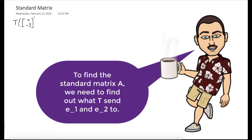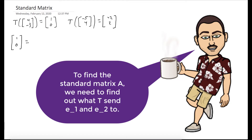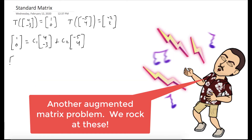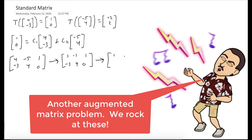So we have a linear transformation that sends (4, -3) to (1, 0), and it sends (-5, 4) to (-2, 2). What we want to do is figure out what the transformation does to (1, 0). So let's express the vector (1, 0) as a linear combination of the vectors we have information about. We write an augmented matrix whose columns are the known vectors, with solution (1, 0), and row reduce to find the combination.